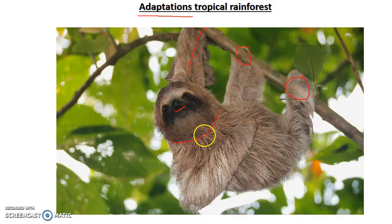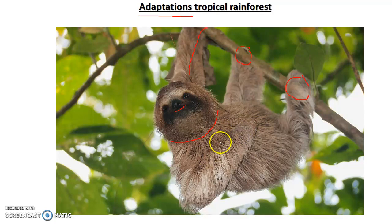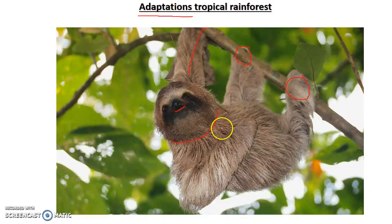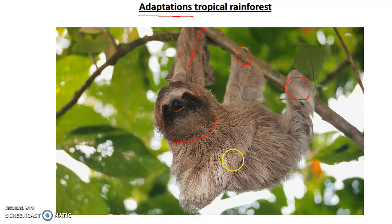A sloth is very slow — remember that David Attenborough video we watched a few weeks ago. A sloth doesn't move very fast, so it conserves a lot of energy. They're very slow and don't really do that much.